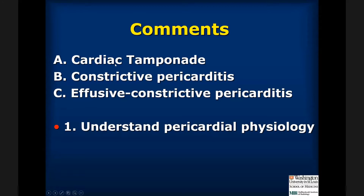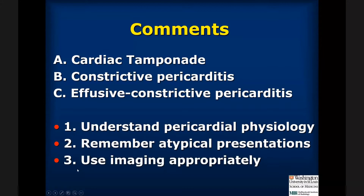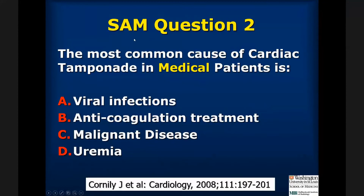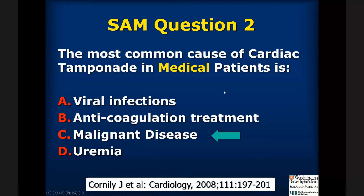To sum up, I have talked about cardiac tamponade, constrictive pericarditis, and effusive constrictive pericarditis. It's important to understand pericardial physiology, remember atypical presentations, and use imaging appropriately. SAM questions: Pulsus paradoxus refers to an exaggerated fall in blood pressure of more than 10 mmHg during inspiration. The most common cause of cardiac tamponade in medical patients is malignant disease. The most reliable MRI sign of constrictive pericarditis is septal bounce. Thank you.